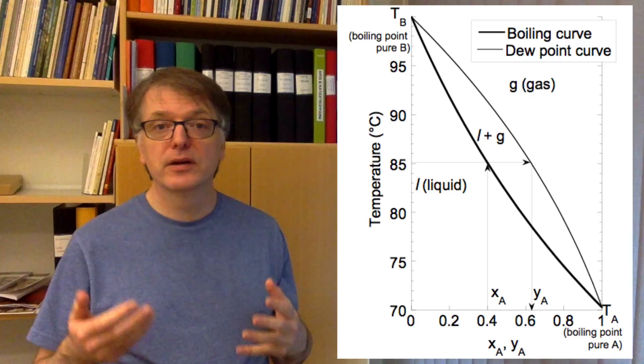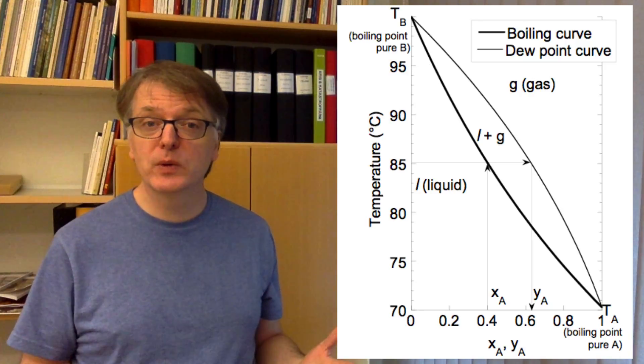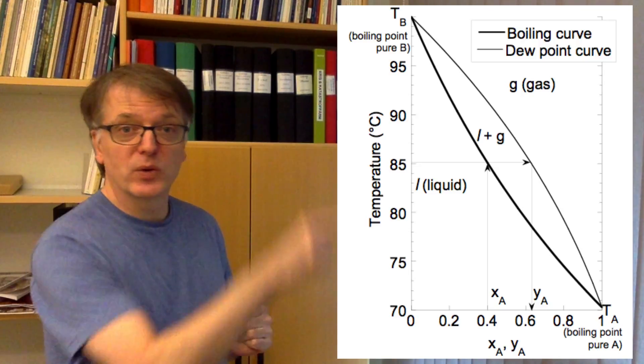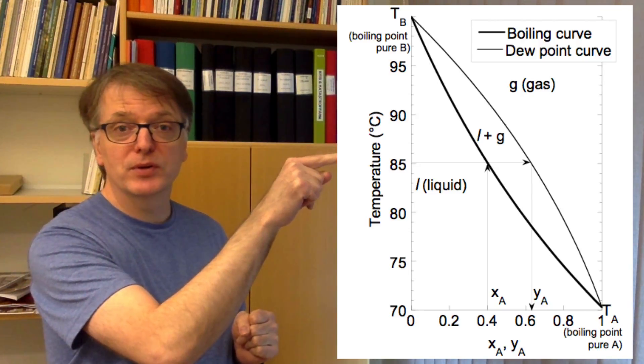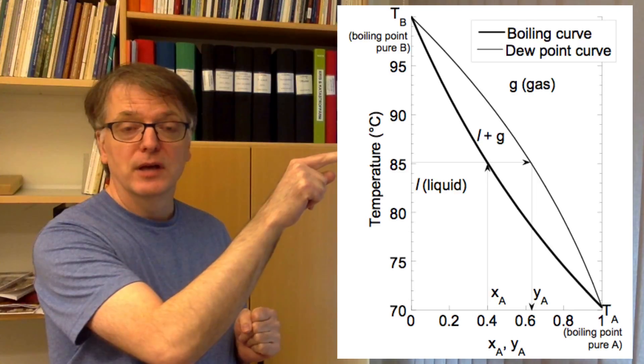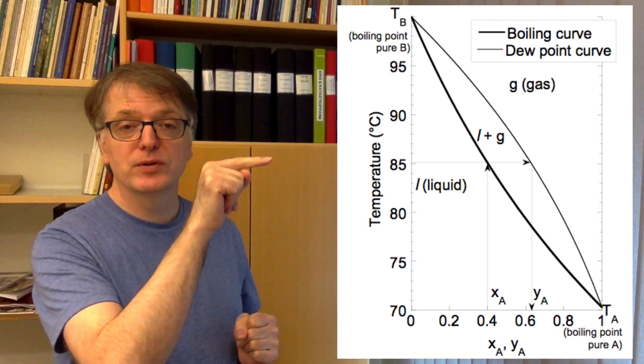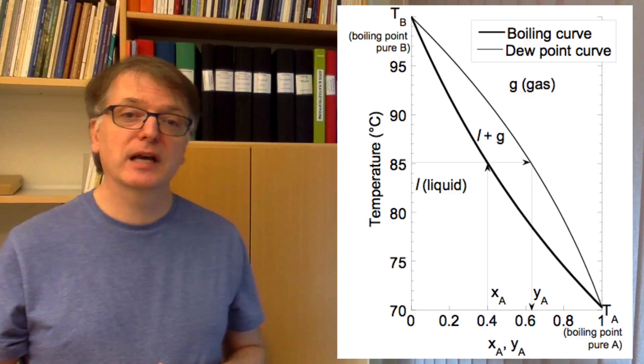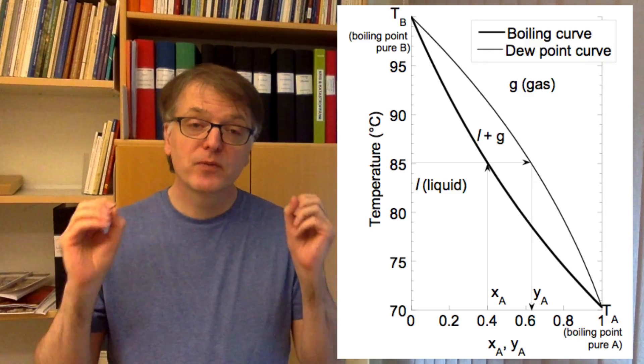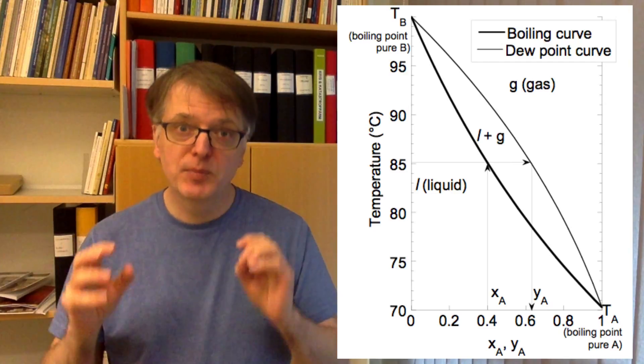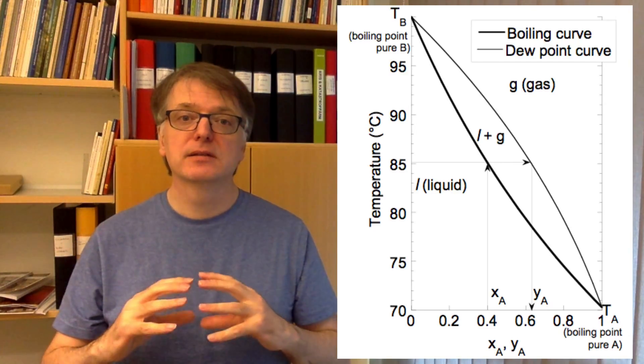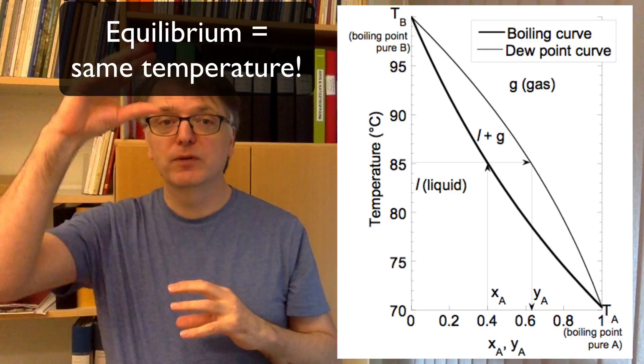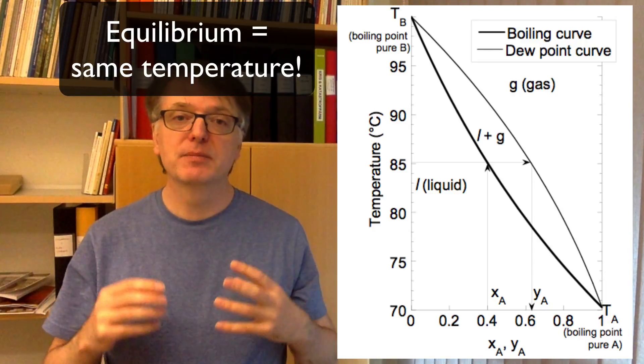And what you do is that, for example, if you're boiling liquid of 40% in this system, you take 40% and then go up to the boiling point curve, and then you go straight over to the gas and then go down again to read what the composition in the gas phase is. And why do you do that? Well, because if you have an equilibrium between a boiling liquid and a condensing gas, then those two phases have the same temperature.